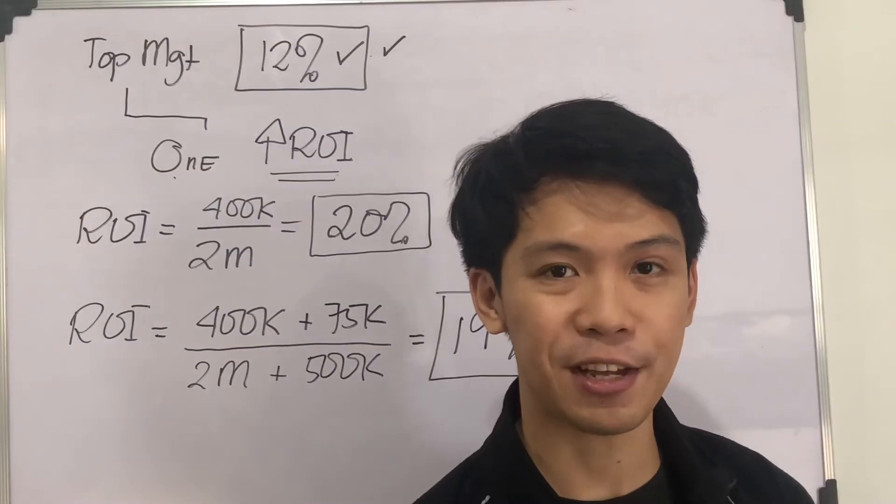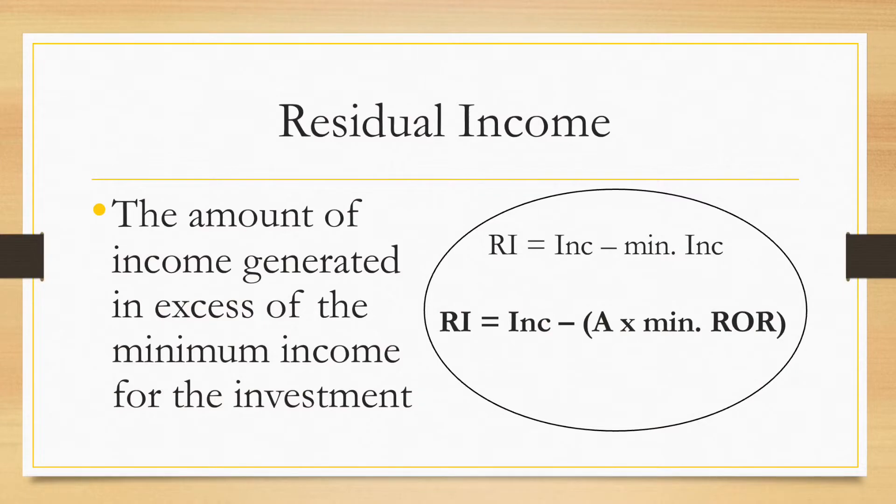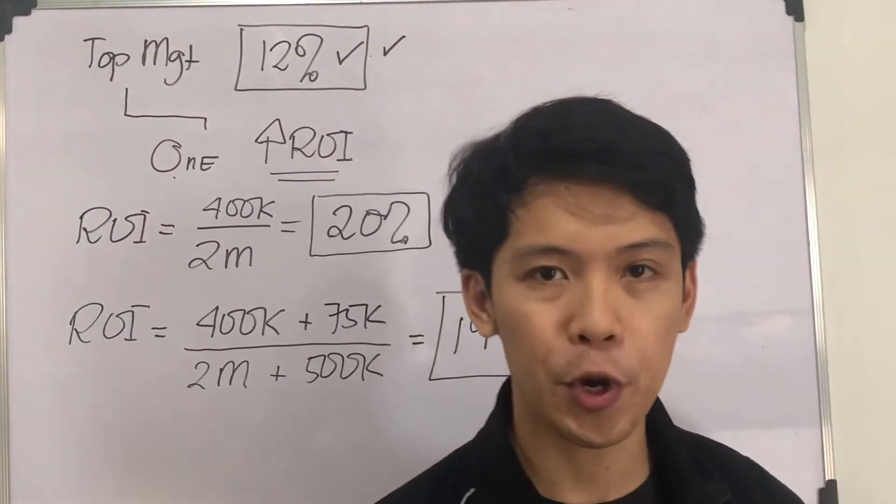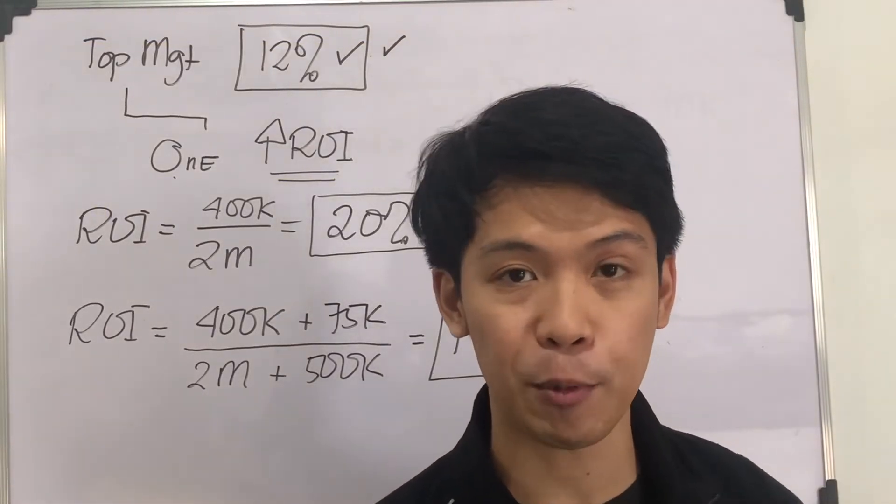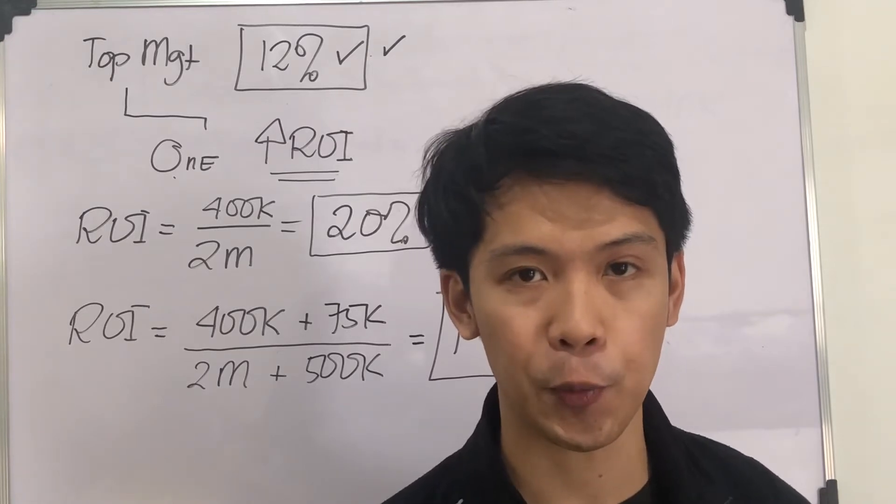Residual income is the amount of income generated in excess of the minimum income for the investment, that is RI is equal to income minus assets times minimum rate of return. Again, we are now going to explore how residual income would facilitate goal congruence.